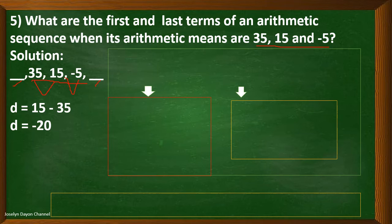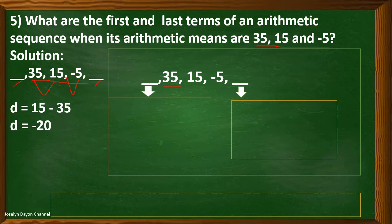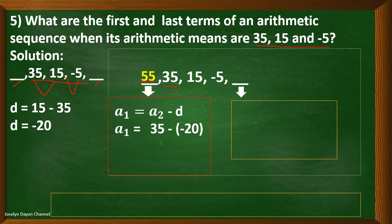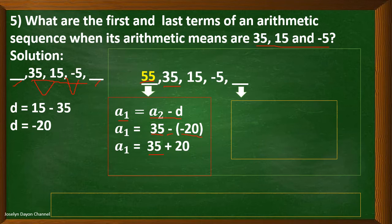From this, we can solve for the first term: subtract 35 by the common difference. So 35 minus negative 20 equals 55 — we have the first term. For the detailed solution: the first term equals the second term minus the common difference, which is 35 minus negative 20. Applying the rule for subtracting integers, this becomes 35 plus 20, which equals 55.